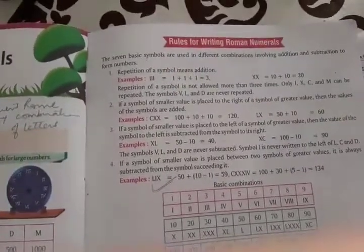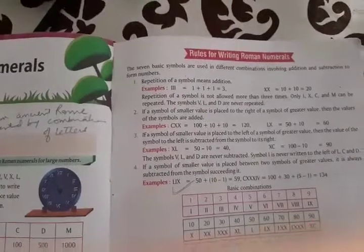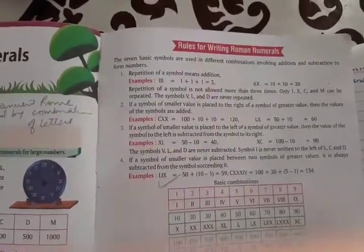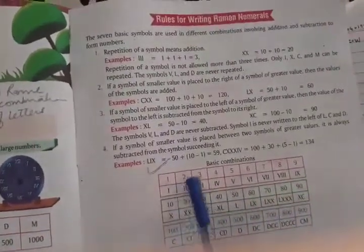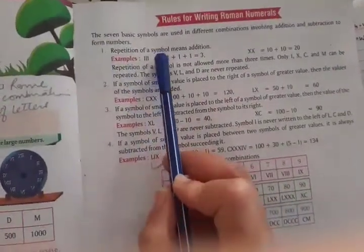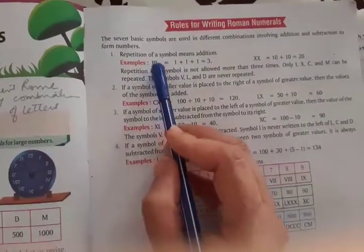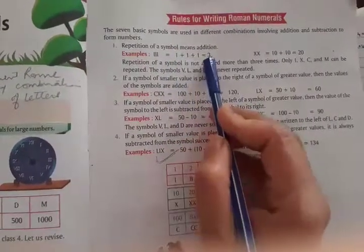Good afternoon dear children. Today we have discussed regarding Roman numerals, the seven basic symbols. I have told you we use them in different combinations for addition and subtraction. Let us revise the rules. The first rule is repetition of a symbol means addition. Like III stands for 1 plus 1 plus 1, which equals 3.